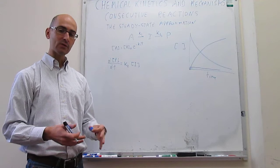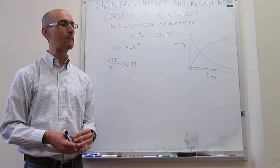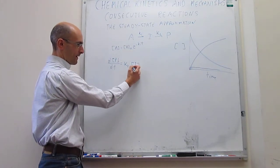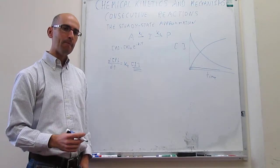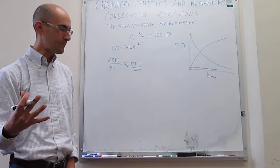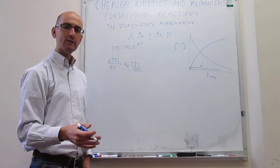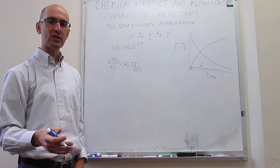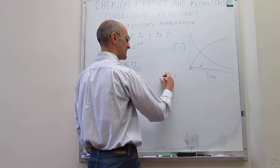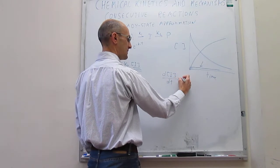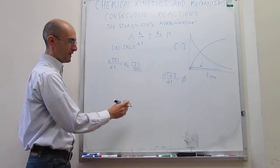With the steady state approximation this becomes much easier and more tractable. The key of the steady state approximation is to recognize that the concentration of the intermediate doesn't change in time. So if I reaches a steady state, we can write that d[I]/dt equals zero — that is the steady state approximation.